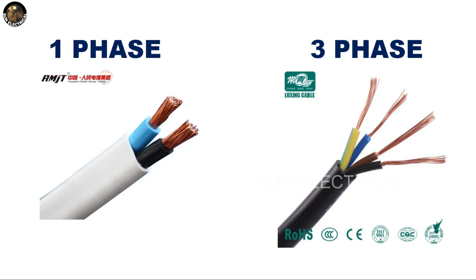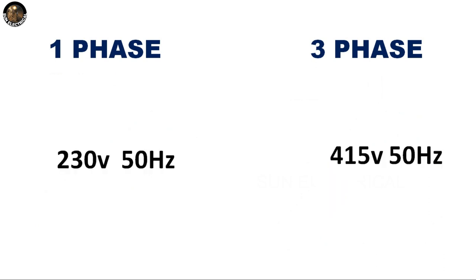Single-phase is a 2-wire system. 3-phase is a 3-wire RYB system or a 4-wire system with neutral. Single-phase power system operates at 230 volts 50 hertz, and 3-phase power system operates at 415 volts 50 hertz supply.